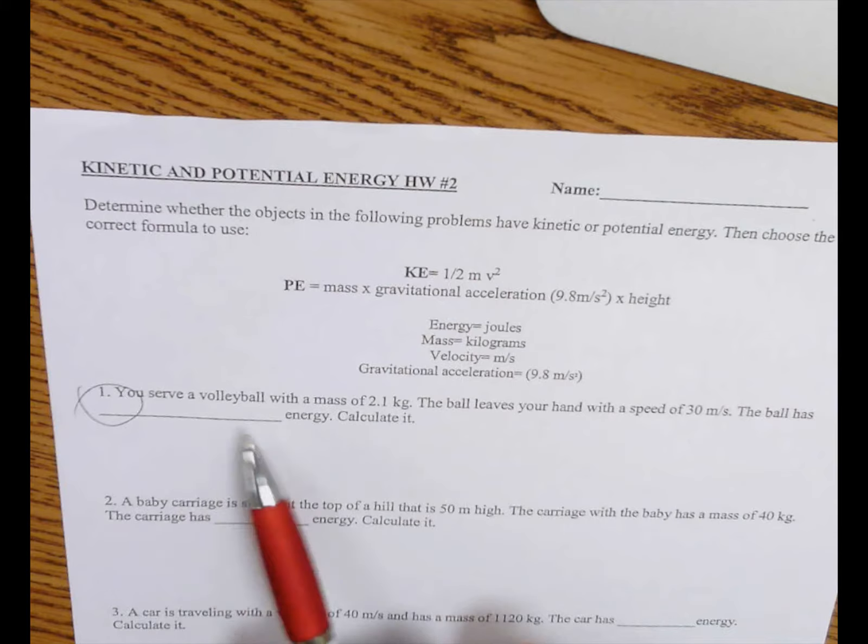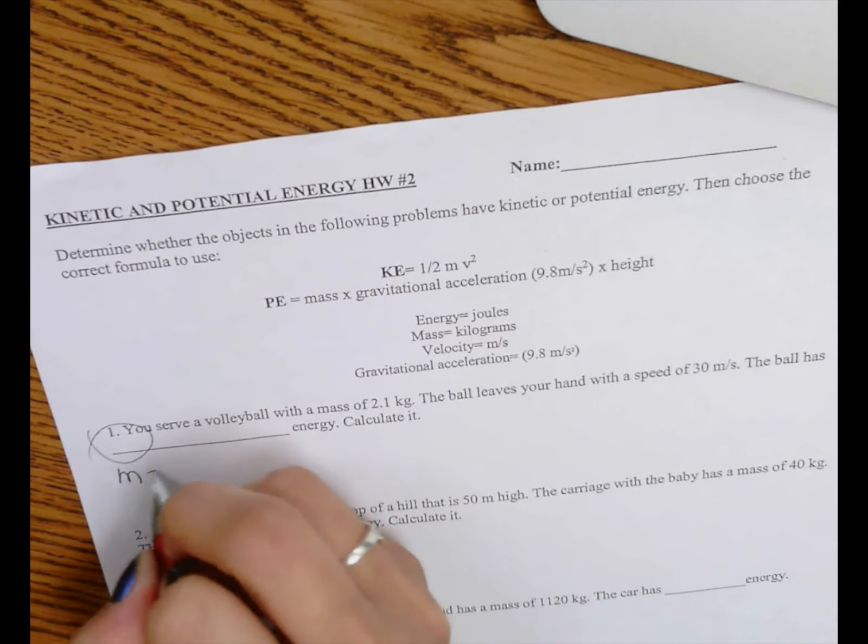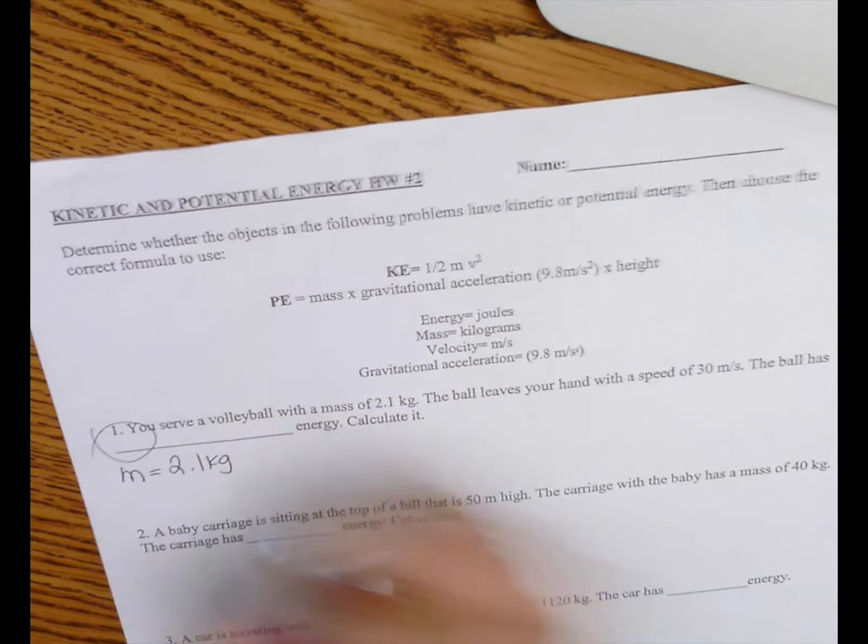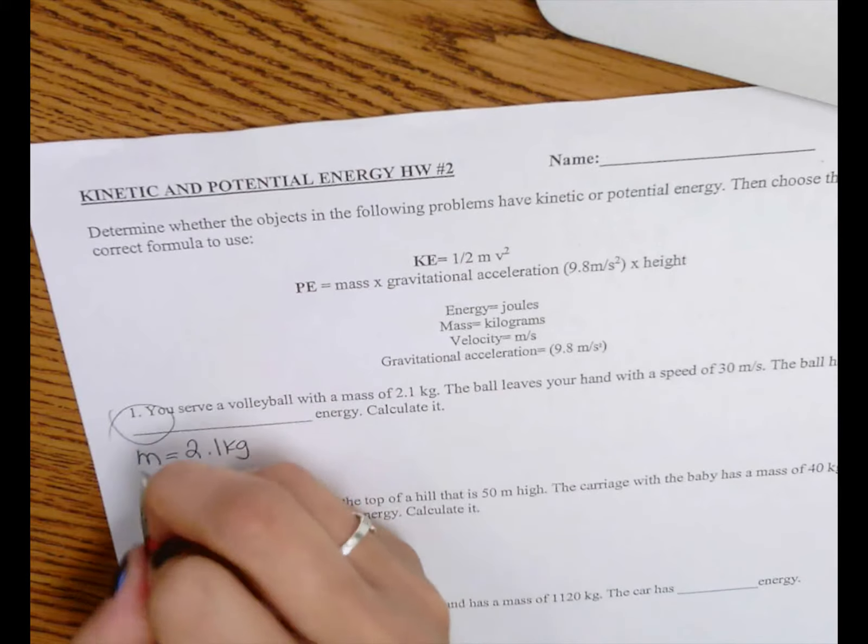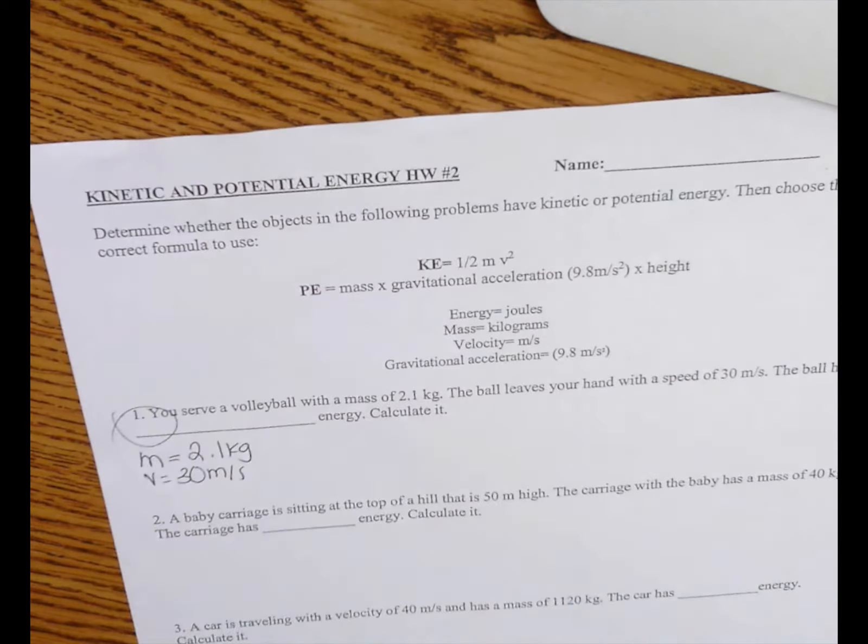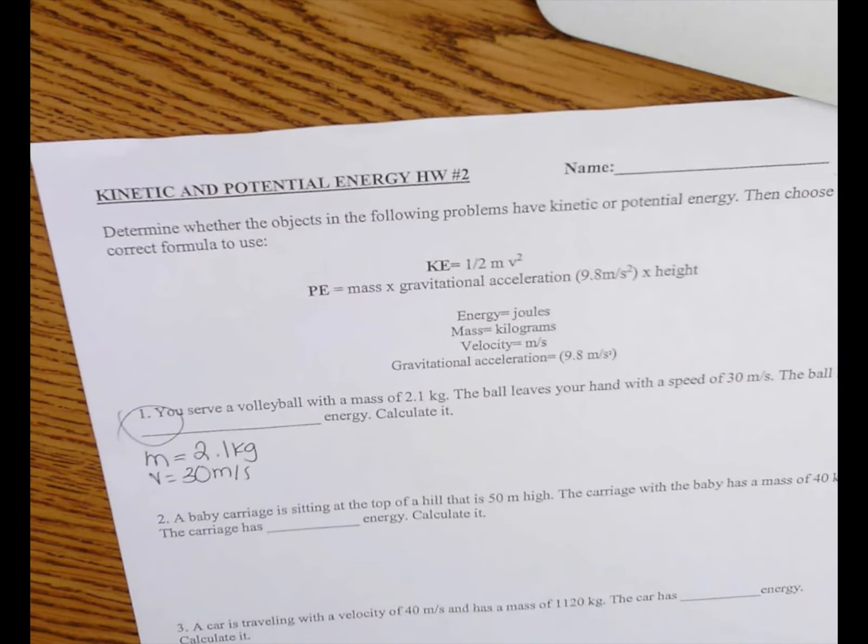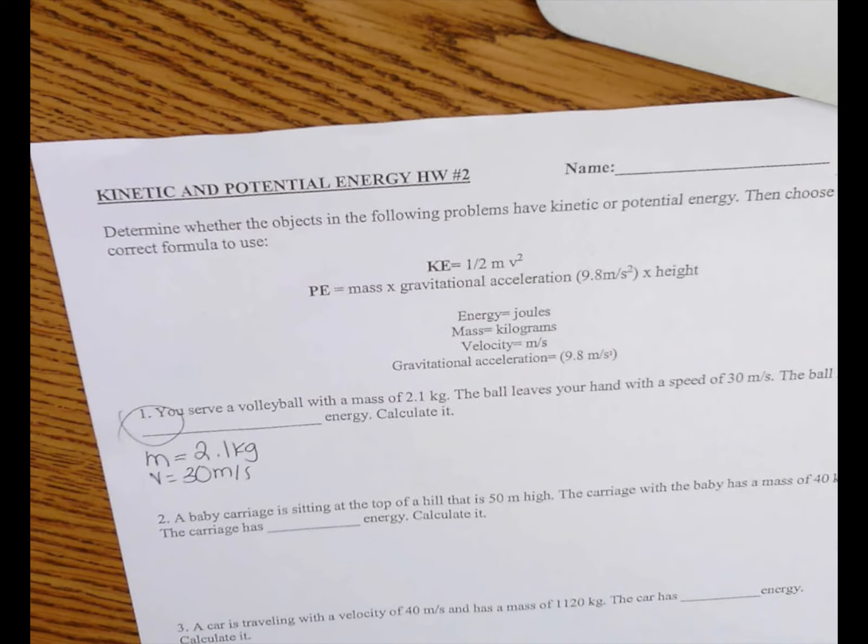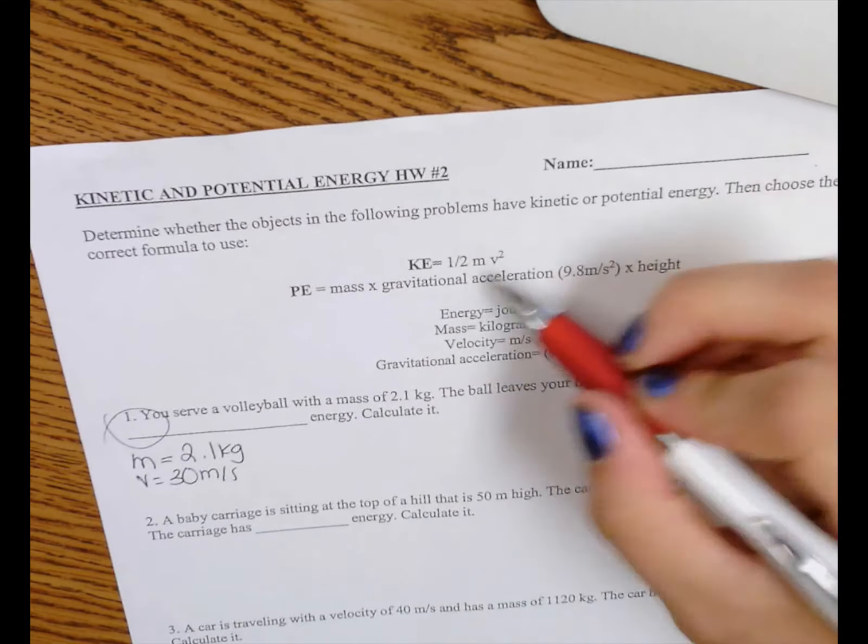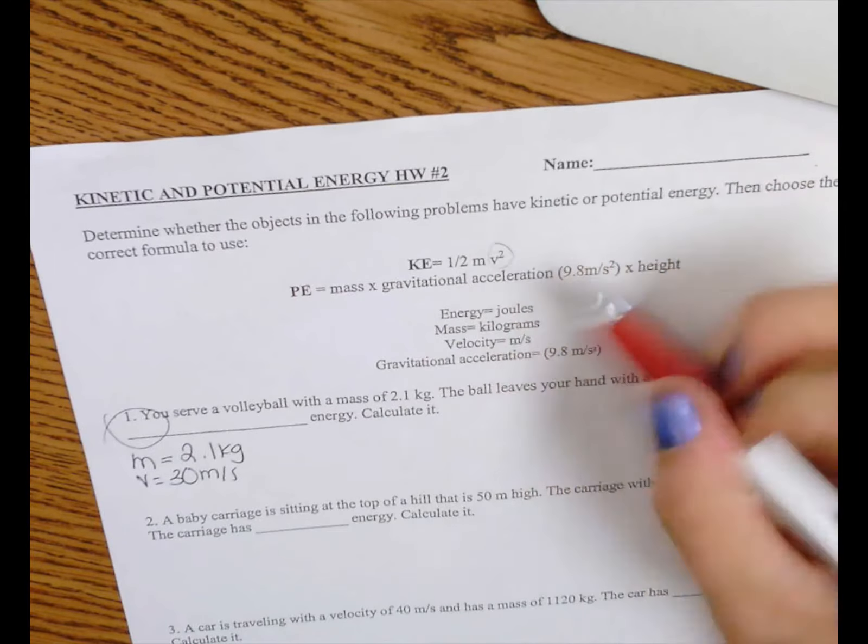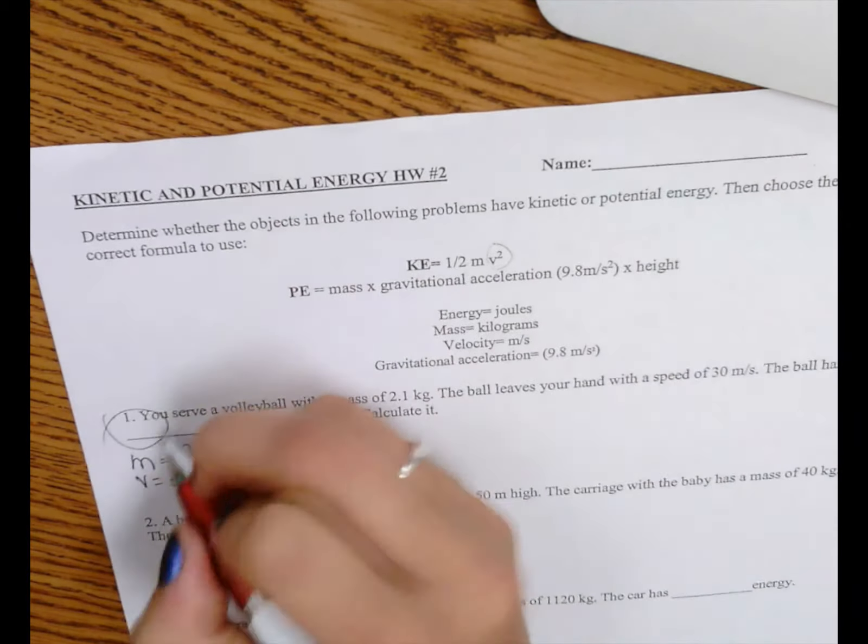So let's say you serve a volleyball with a mass of 2.1 kilograms. So we know the first variable is mass equals 2.1 kilograms. The ball leaves your hand with a speed or velocity of 30 meters per second. The ball has blank energy. All right, what is the moving energy? Well, let's think about it this way. If kinetic energy is one half mass times velocity, so it's got speed, and potential energy doesn't have speed, which one does it have in this problem? It has a bunch of kinetic energy.